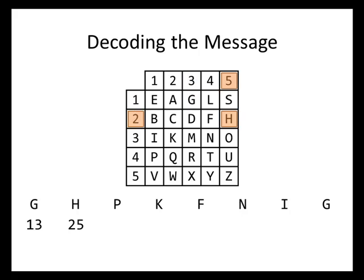And then we look up the h is in row 2, column 5, p is in row 4, column 1, k is in row 3, column 2, f is in row 2, column 4, n is in row 3, column 4, i is in row 3, column 1, and g is in row 1, column 3. So we get one big long list of numbers.